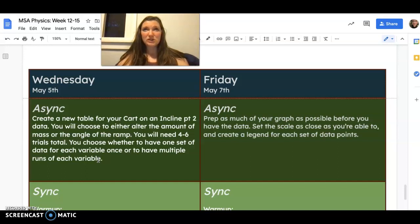You're going to choose whether you're going to change up how much mass is on the cart or the angle of the ramp. So you're going to have four different variations on that. For example, if you do mass, you'll have either no extra mass blocks or two, three, four, or one, two, three mass blocks.